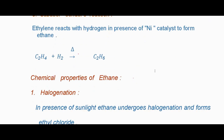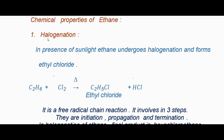Now, coming to the chemical properties of ethane. The first reaction is halogenation. Halogenation means reaction with halogens — fluorine, chlorine, bromine, iodine. Here we take chlorine as the halogen. In halogenation, ethane in the presence of sunlight (hν) undergoes halogenation and forms ethyl chloride and HCl. This halogenation reaction is a free radical reaction.